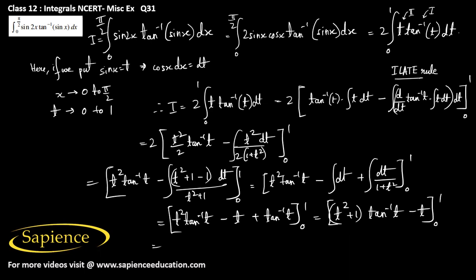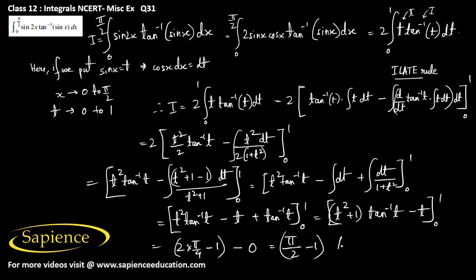Substituting t = 1: (1+1)·tan⁻¹(1) − 1 = 2·(π/4) − 1 = π/2 − 1. Substituting t = 0: (0+1)·tan⁻¹(0) − 0 = 0. Therefore the final answer is π/2 − 1. Thank you.